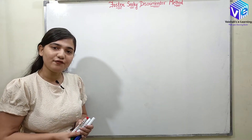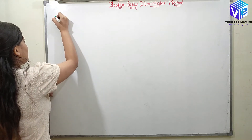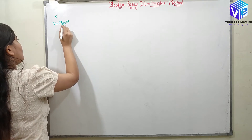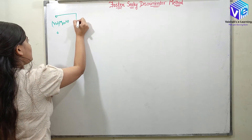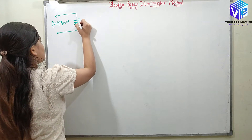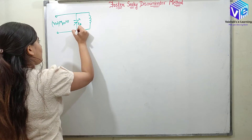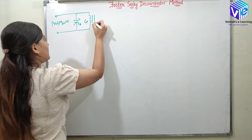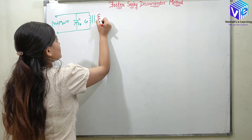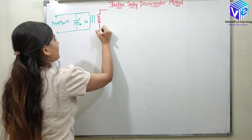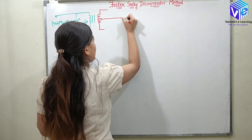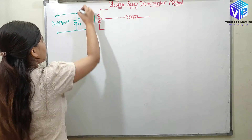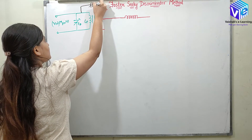First of all, we will see the circuit of the Foster-Seeley discriminator method. Here we have the input voltage in the form of an FM modulated signal — FM(t) — which is applied here. It is connected to a tank circuit with CP and LP. It is coupled to the center-tapped secondary transformer, and here also I am using an inductor coil.